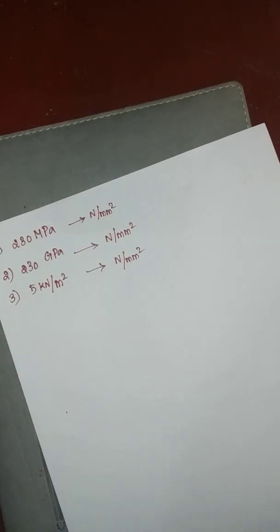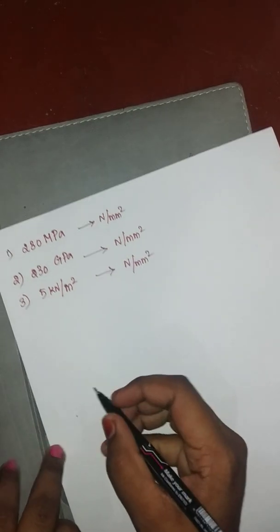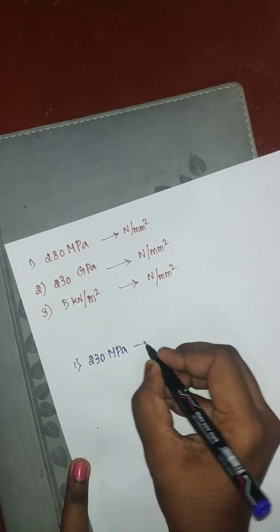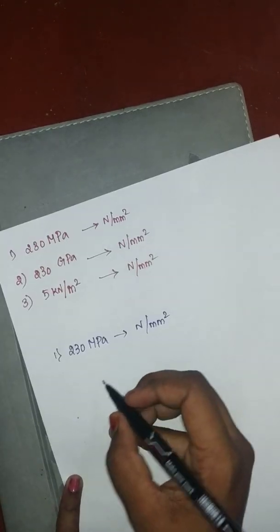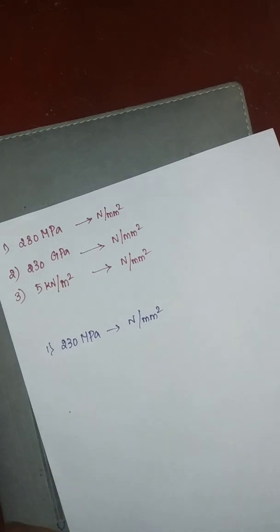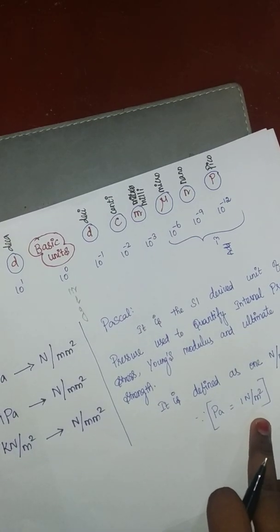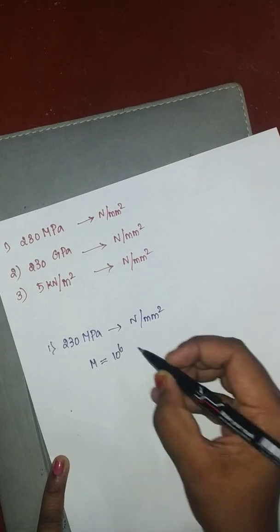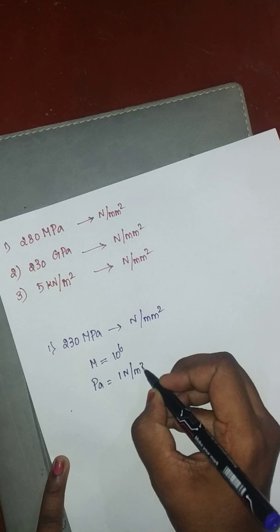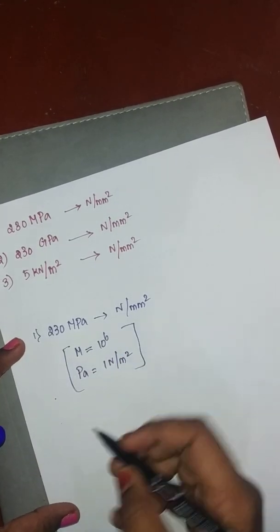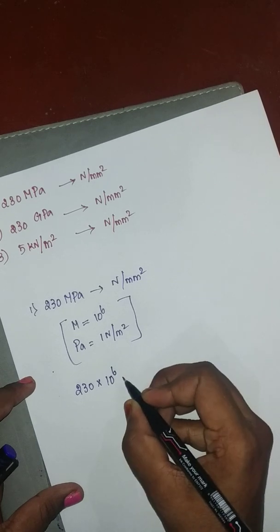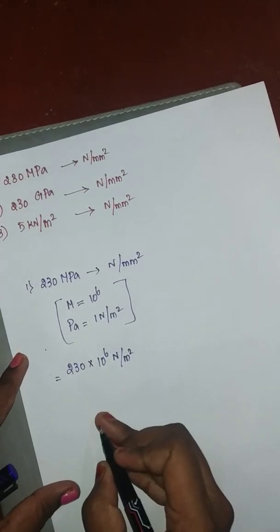Now let's solve an example. Convert 230 megapascal to newton per mm². Mega is 10 power 6 and pascal is 1 newton per m². So 230 megapascal equals 230 × 10⁶ newton per m².